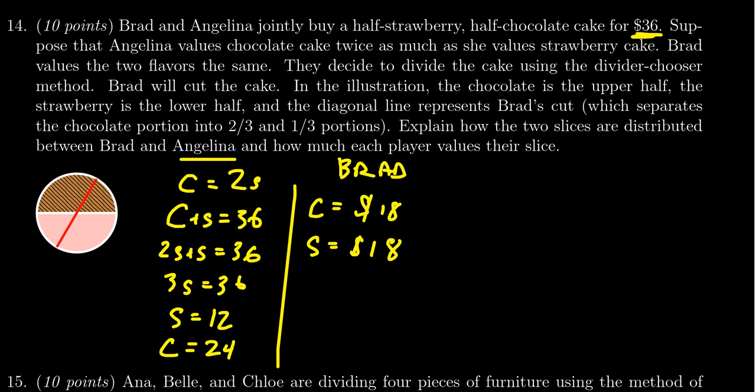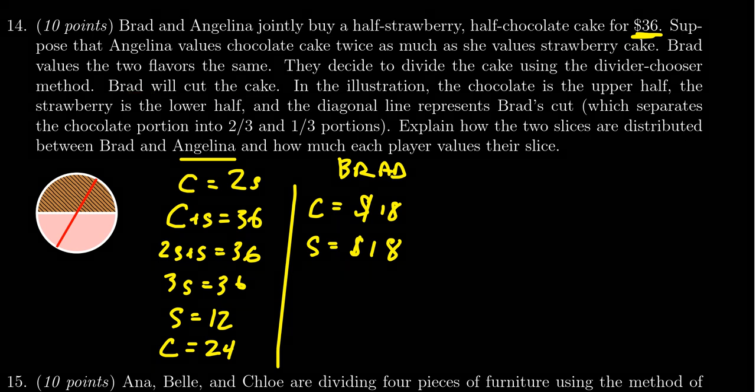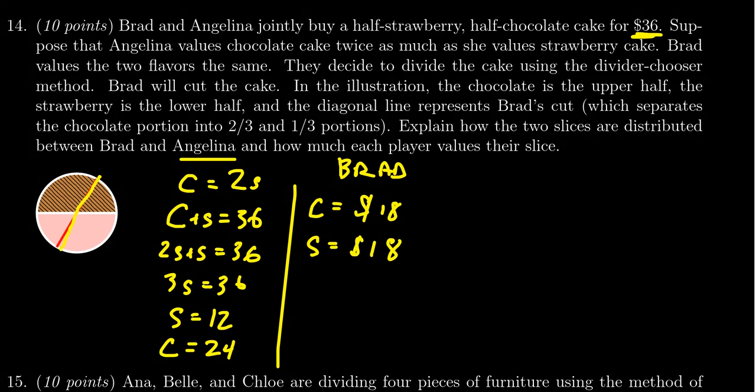Brad is going to cut the cake, so he's gonna cut the cake according to the illustration. He's gonna cut the cake along this diagonal line so that you get two-thirds of the chocolate on the left slice and one-third of the strawberry on the left slice, and then you get one-third of the chocolate here and then two-thirds of the strawberry here.